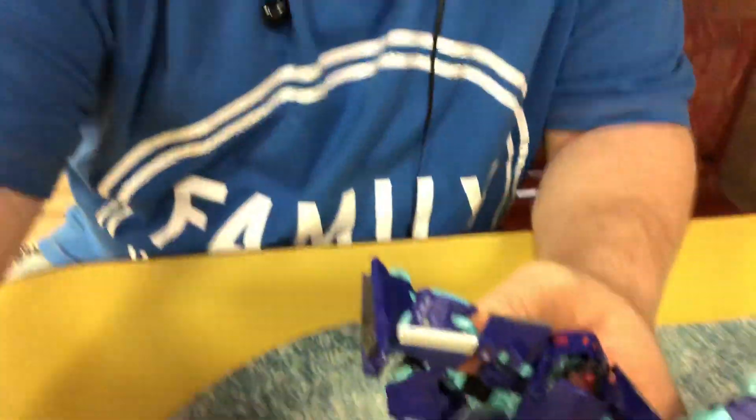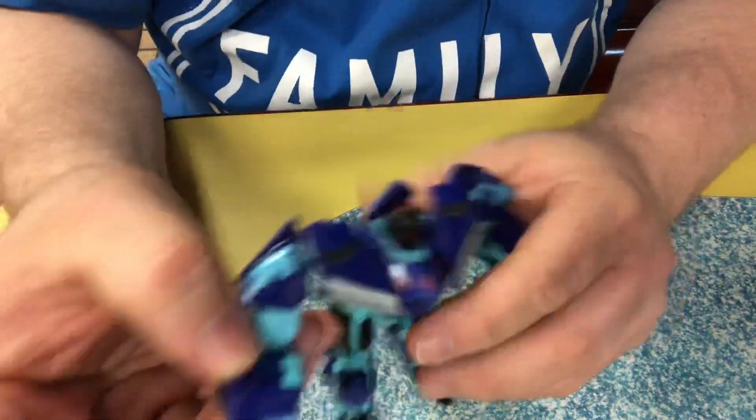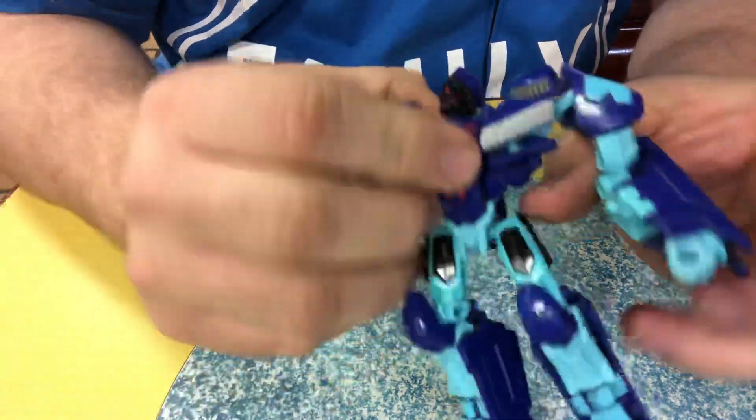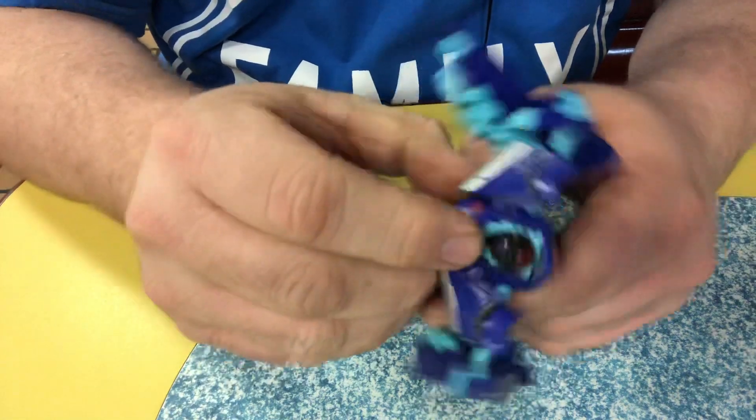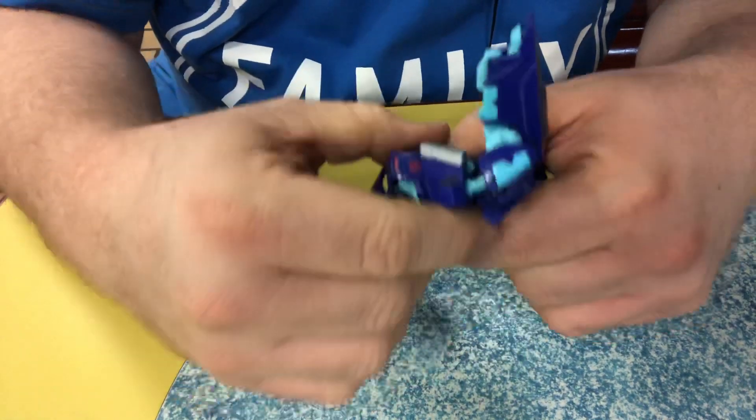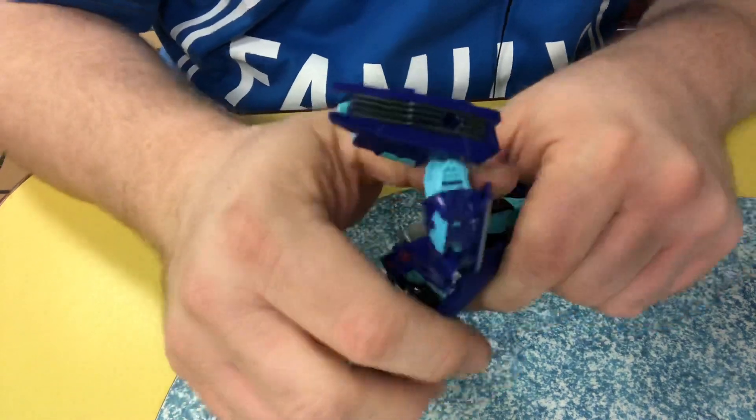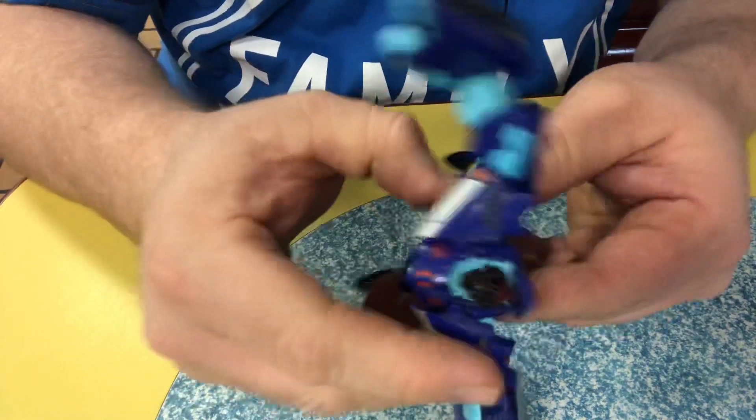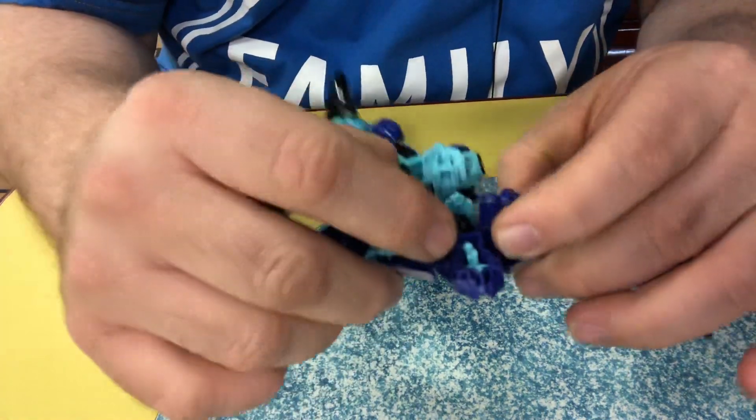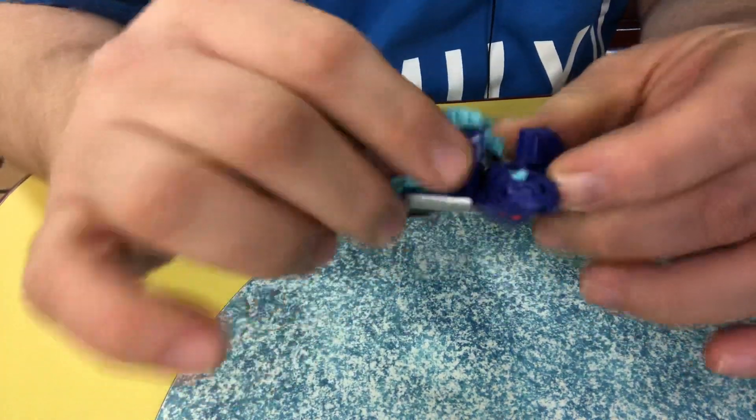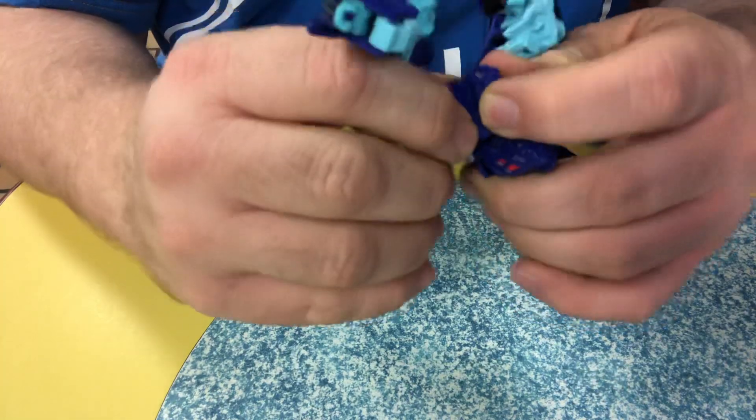To transform him, okay, down. You can fold the hands in with the arms. Rotate the arms, unhook the chest, bring it all the way up. Unhook the shoulders.